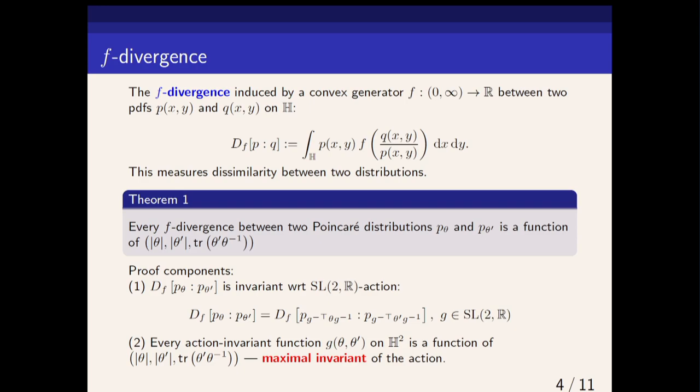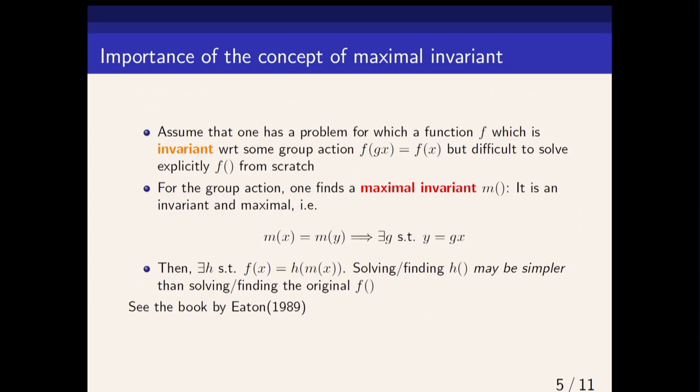The notion of maximal invariant works for any group action and has been applied in statistics by Eaton in his book on transformation models in statistics. The idea is very simple: we take a function f and say that the function is invariant under a group action by g if we have f(gx) = f(x)—just the notion of invariance.